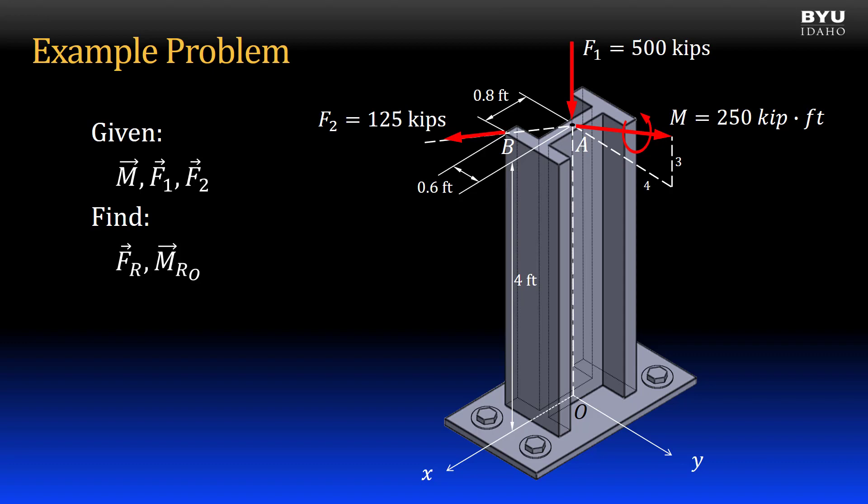F1 is a vertical force acting through point A. F2 is acting in a horizontal plane with a line of action through points A and B. A moment is applied at point A in the YZ plane, inclined from the horizontal as shown by the 3-4-5 triangle. We will simplify this system of forces and moment to a single force resultant and a single moment resultant at point O.